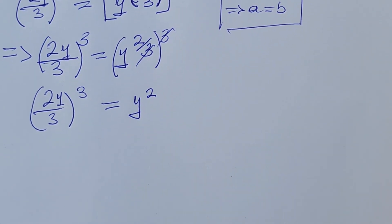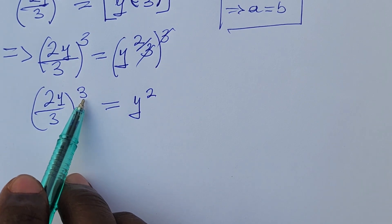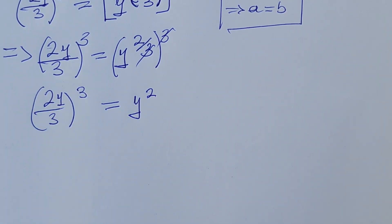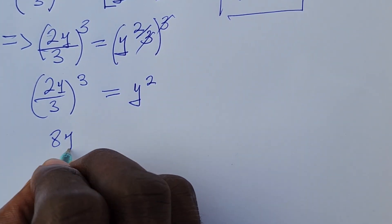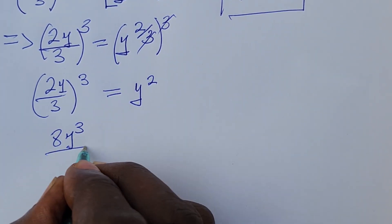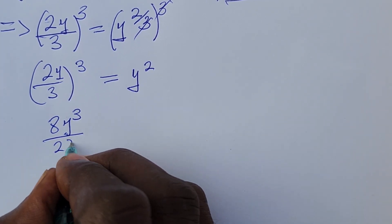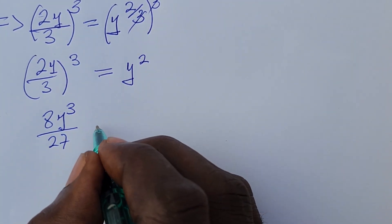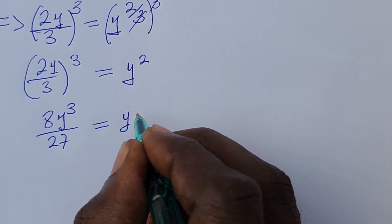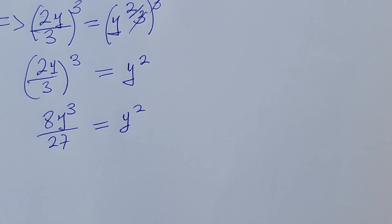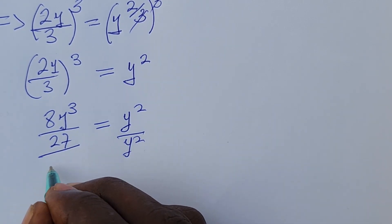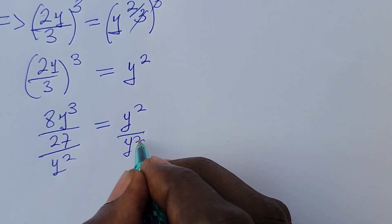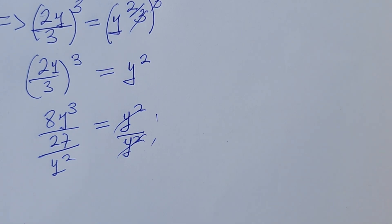So what do we do next here? We can use this power to open up everything inside. So if we do that, we're going to have this to be 8y to the power of 3 over 27. This is equal to y to the power of 2. Divide by y to the power of 2. We're left with 1 here. Two of these go with 2 from here, so we're left with y.